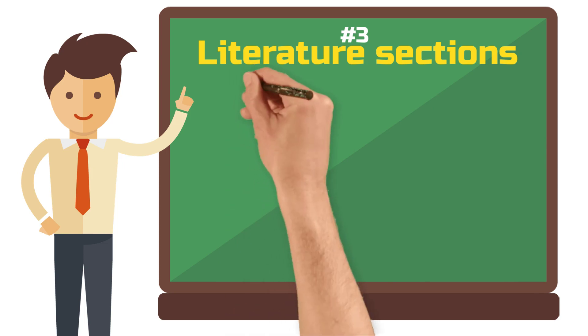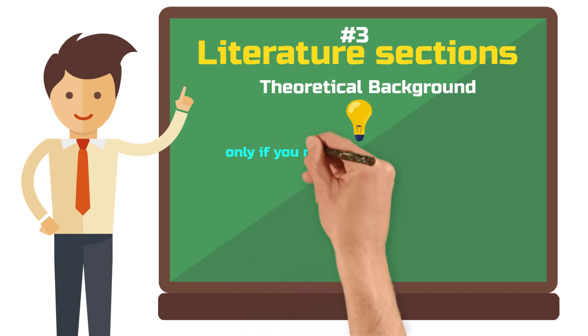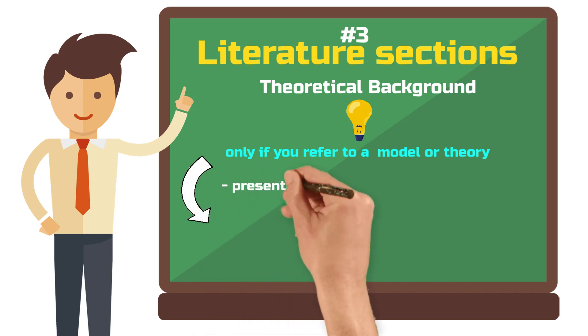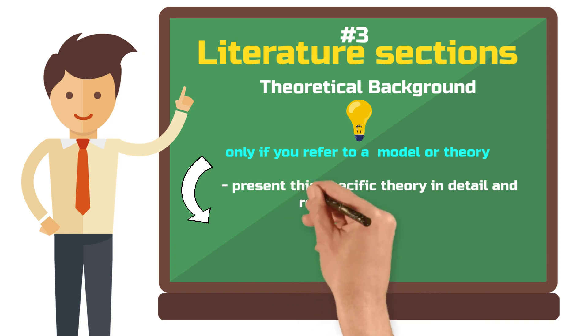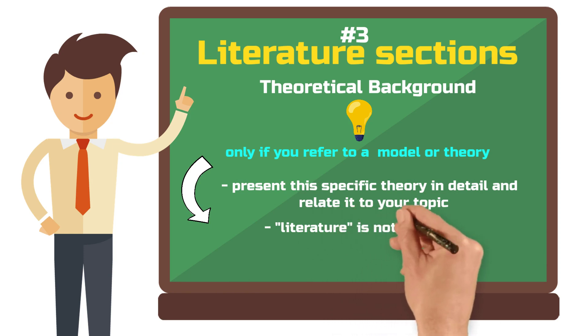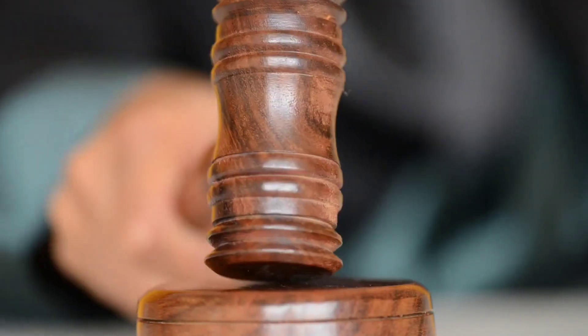The second part of your literature sections can be a theoretical background, but only if you refer to a single model or theory throughout your work. Then you should present this specific theory in detail in a separate chapter and relate it back to your topic. A research paper can also suffice with just literature sections on the current state of the art. If you do not want to delve into a specific theory or model, that is fine — you simply have to make this decision. It often helps to consult with your supervisor about which approach they recommend.